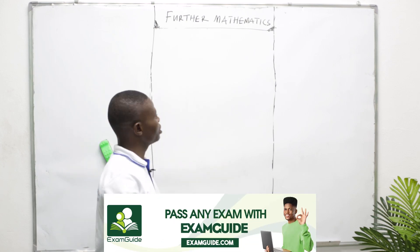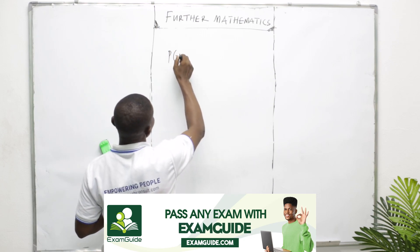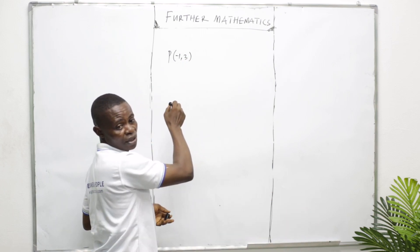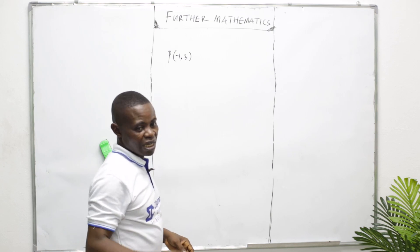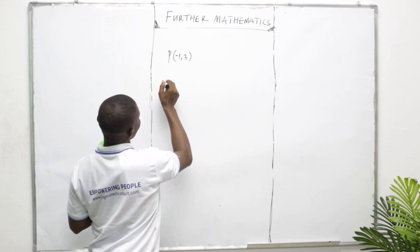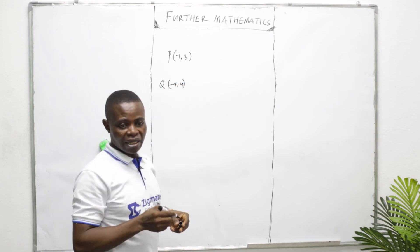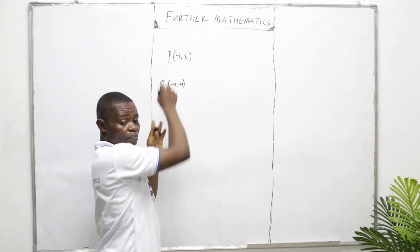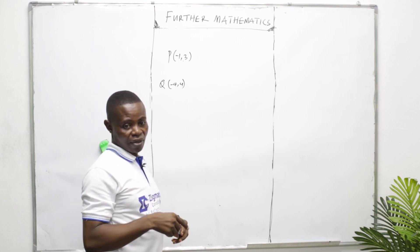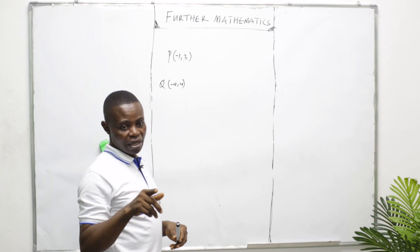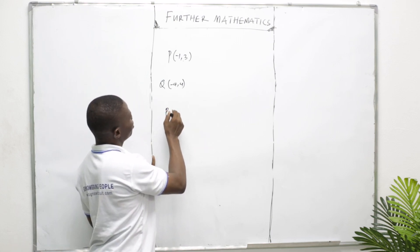Get your points out. P is (−1, 3), Q is (−4, 4), and R is (K, 5). The angle PRQ is 90 degrees, meaning the right angle is at R. So we have line PR and line QR meeting at R.